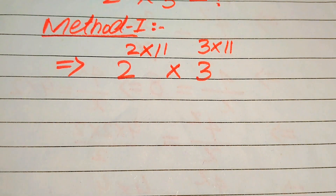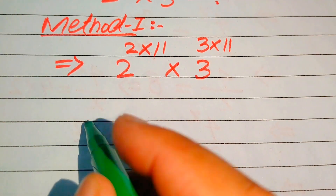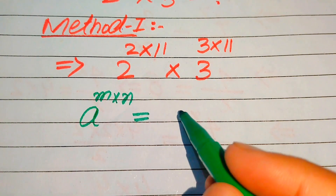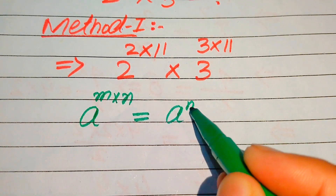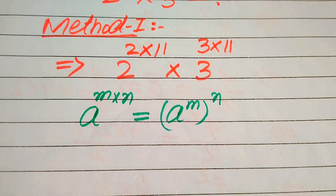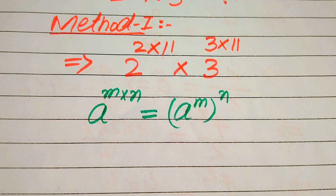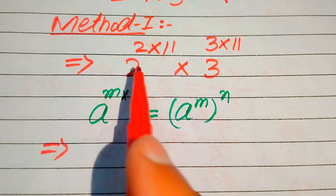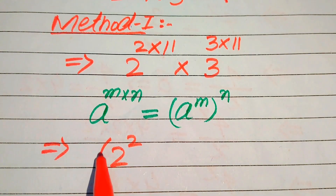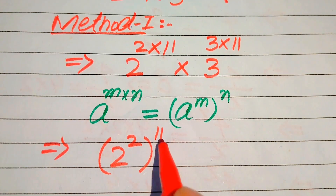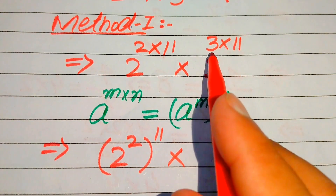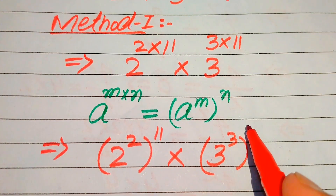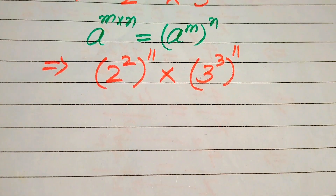Here we use the exponential law: if we have a to the power of m multiplied by n, we write it as a to the power of m, to the power of n. According to this law, we move the 2 inside the term, giving us 2 squared with whole power 11, multiplied by 3 to the power of 3 with whole power 11.